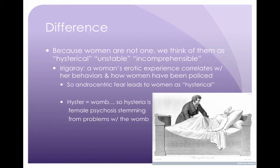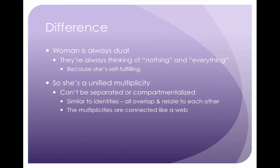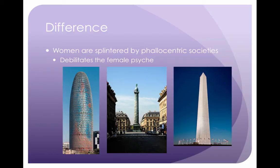Remember, 'hyster' is the Latin root meaning womb. So hysteria comes from an old diagnosis of female psychosis that results from some defect or condition in the uterus or womb, and you can see in this picture this doctor is healing this woman of hysteria. Because a woman is not one, she's always dual and has dual meaning — always thinking of nothing and everything at the same time, according to Irigaray. This makes her multiplicitous, but the duality and multiplicity is still unified and can't be separated or compartmentalized. It's sort of like how we've talked about race and gender identities — you can't separate your identities because they all overlap and relate to each other. But women are splintered by phallocentric society, leading to a debilitation of women's psyches.